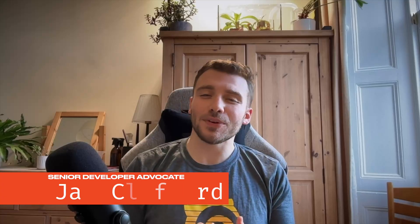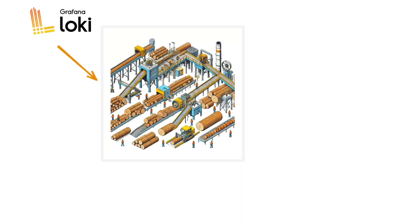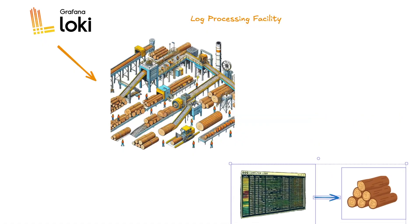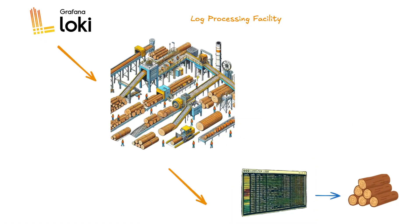To ground our components in a real-world example, we'll use a log processing facility, treating our virtual logs as real-world logs. We will tie each of Loki's components to part of the processing line. Logs will arrive at the facility, be processed and stored within a warehouse, before customer requests come in to retrieve those logs. So let's start with the components that make up the ingestion process.